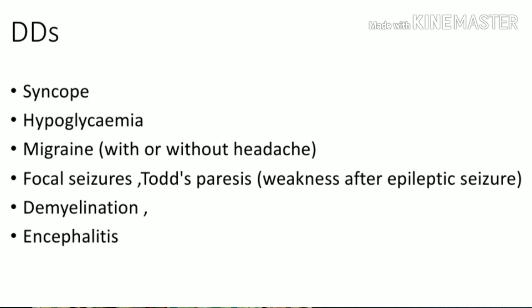After focal or generalized seizures, a patient can present with paralysis of one part of the body, known as Todd's paresis. Demyelinating disorders like Guillain-Barré Syndrome can present like stroke, though it is a progressive disorder. Acute encephalitis can also present like stroke. Importantly, both hypoglycemia and hyperglycemia can present with acute loss of consciousness and must be considered.